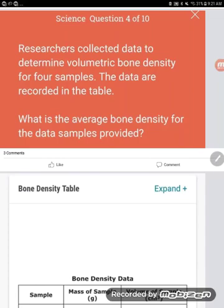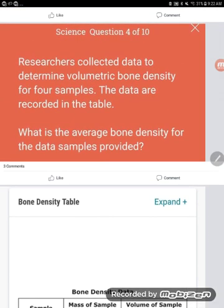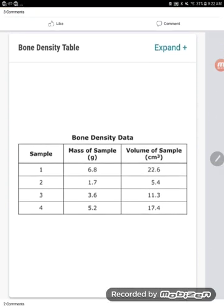Hey GED students. I was in a GED group online and some students asked about this problem, so let's take a look here. It says researchers collected data to determine volumetric bone density for four samples. The data are recorded in the table. What is the average bone density for the data samples provided?